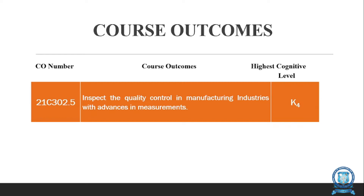This is the course outcome for the fifth unit. After the completion of this unit, students will be able to inspect materials with the help of advanced measuring instruments, check materials using these instruments, and control the quality of materials.